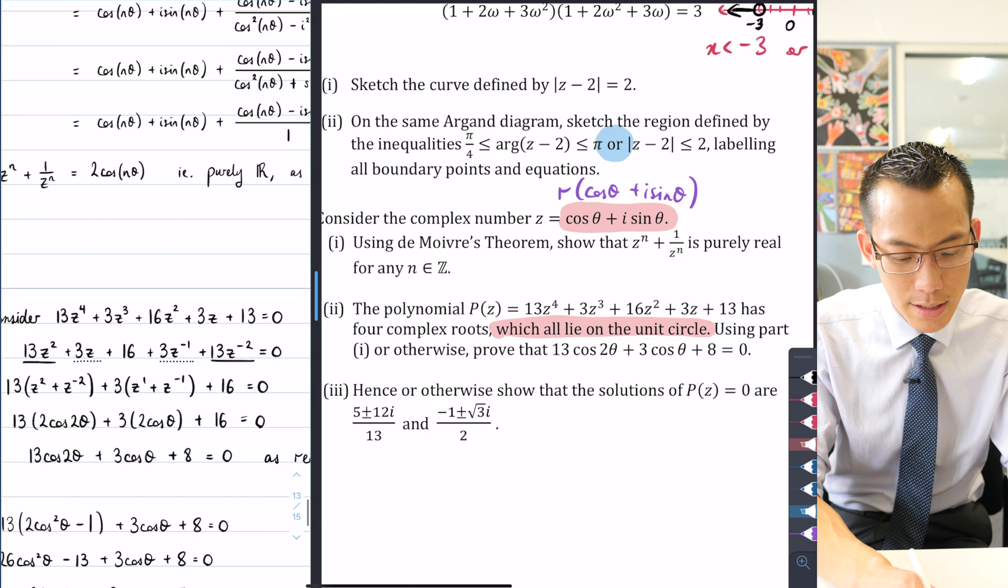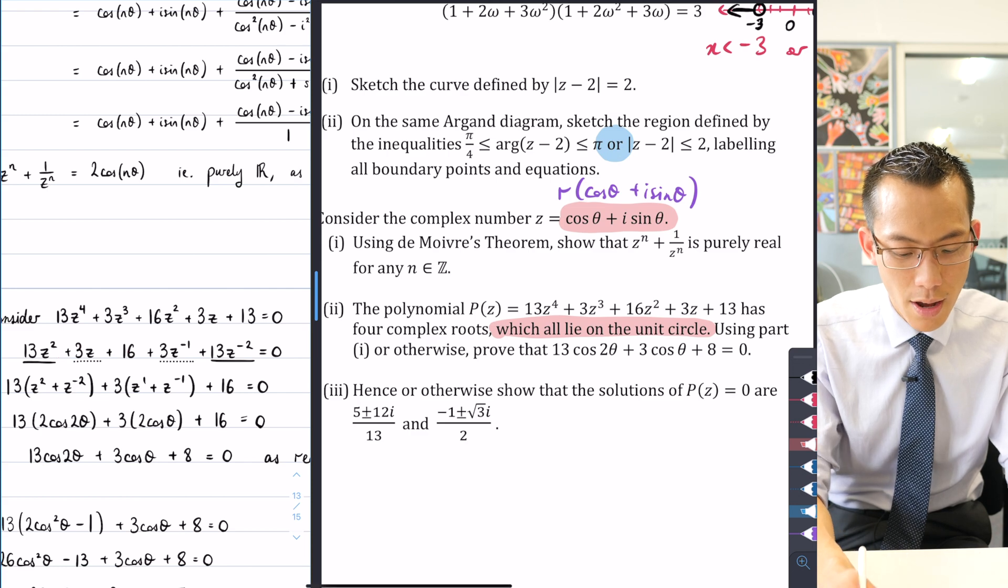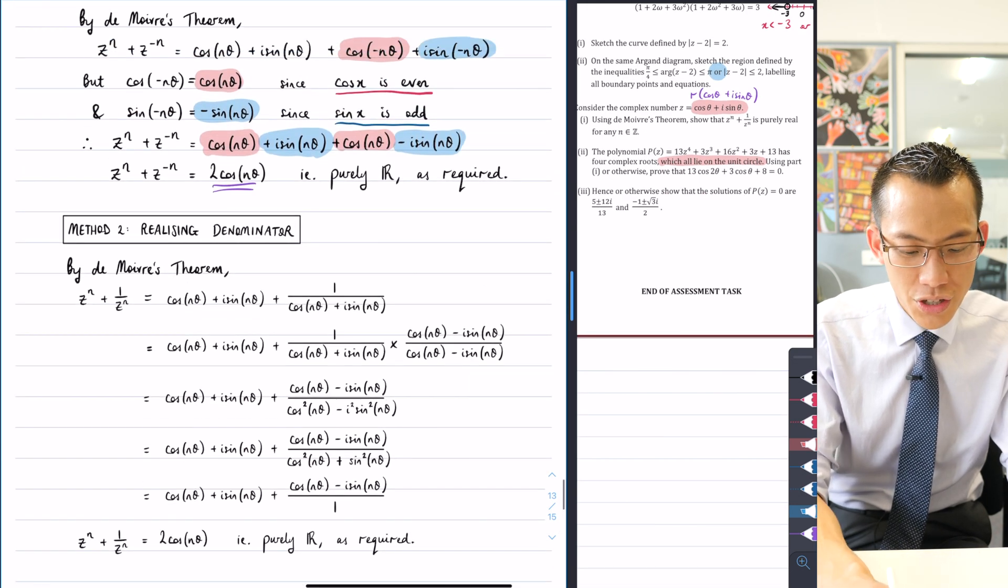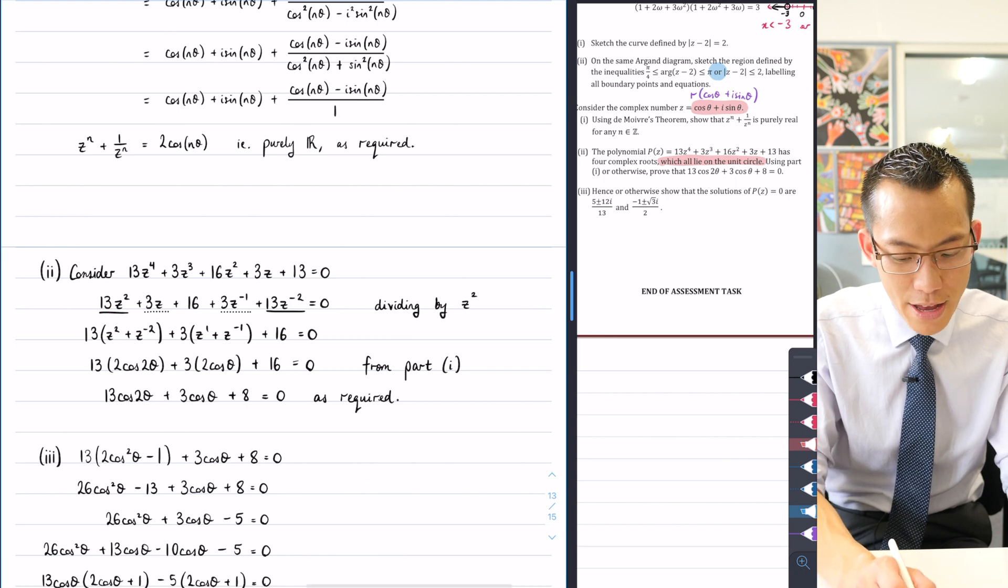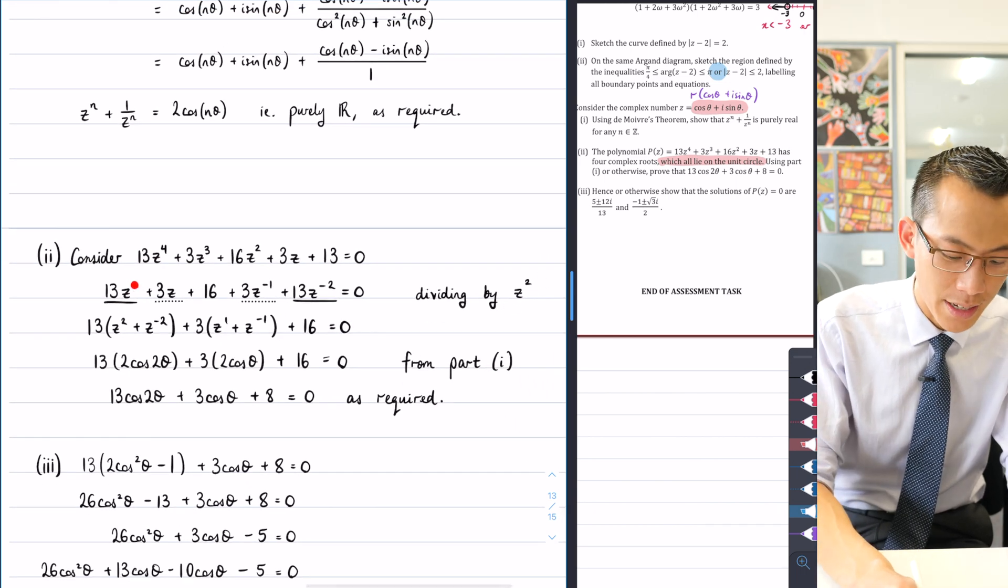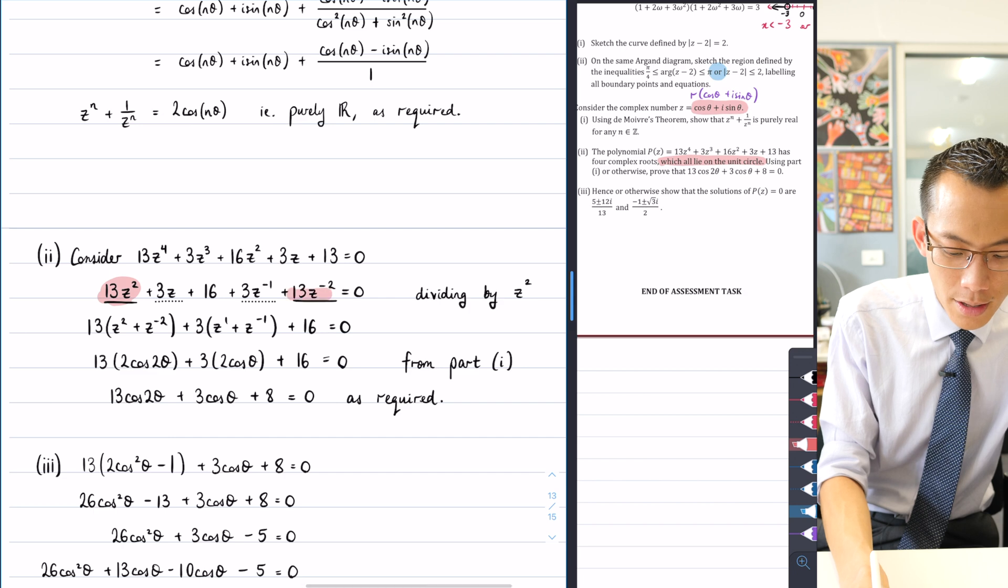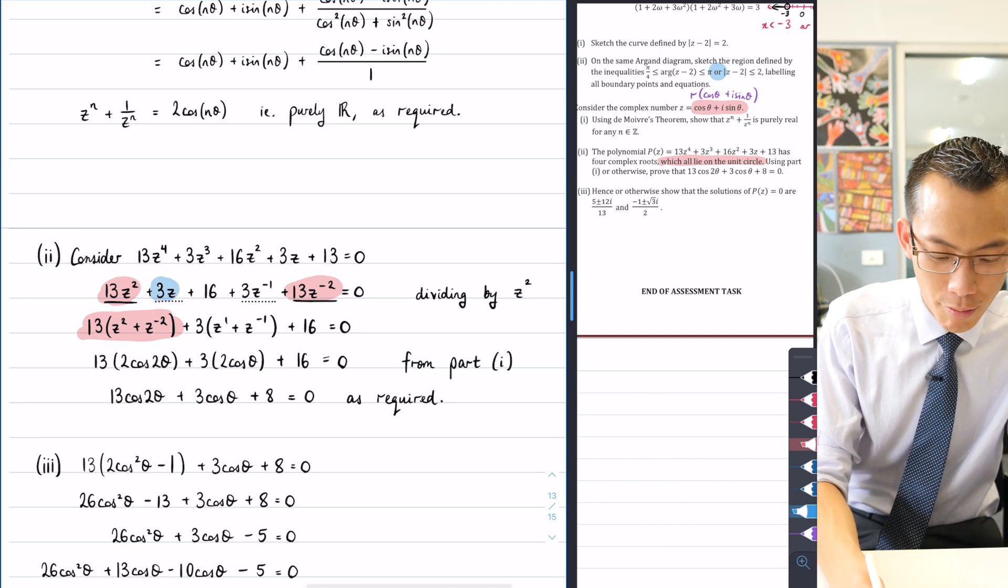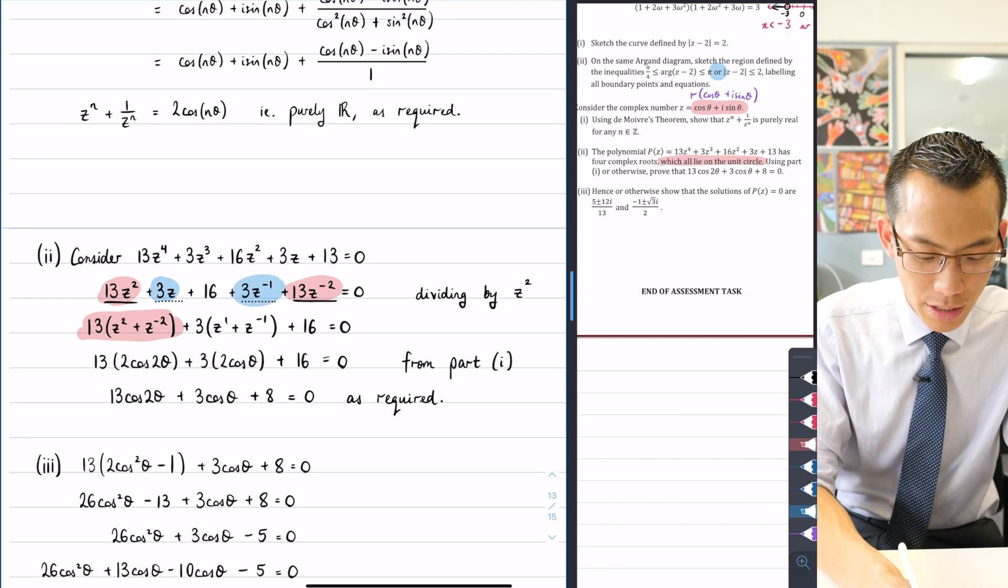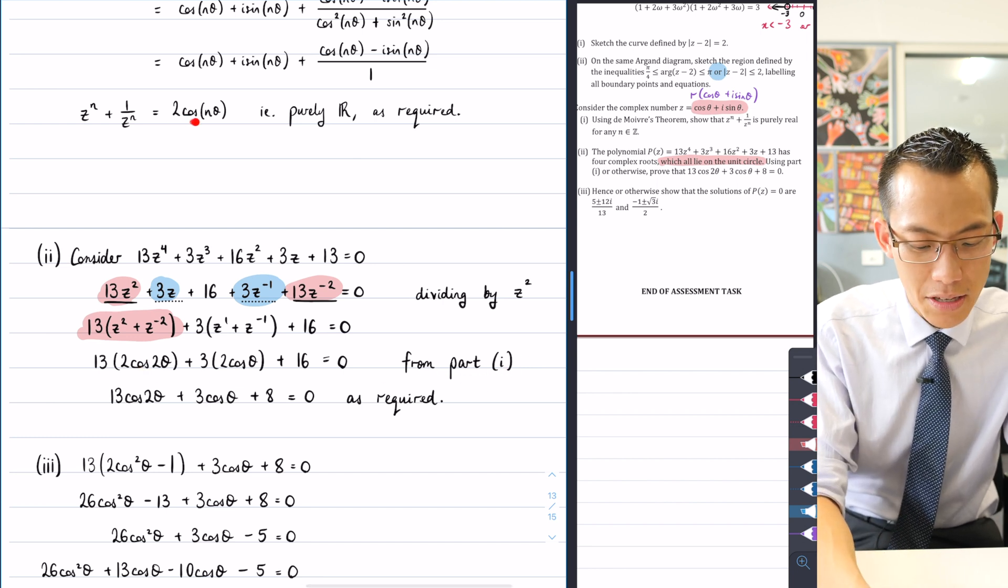Okay, so then what I've done is I've noticed there's a symmetry to the coefficients of this and it means that I can use this result from part one, which is to say when you've got z to the n plus z to the negative n these combine and just give you this real result. So you can see here if I can manufacture this by dividing through by z squared you get a z squared here and a z to the negative two there. So you can see I've combined these two here, I've underlined them and it gives you this term out the front. You can do the same with the z and the z to negative one, or should I say the three z and the three z to the negative one.